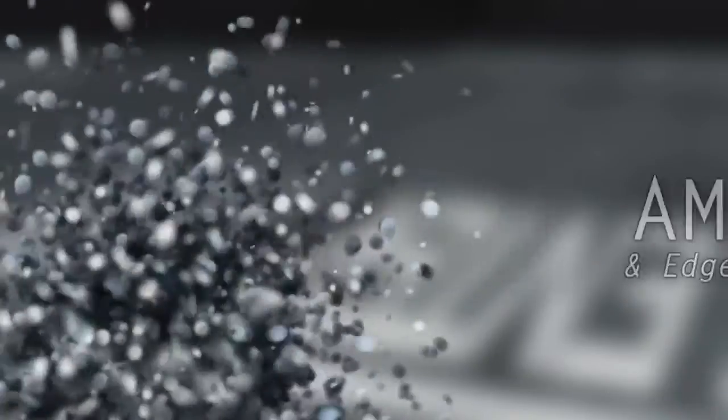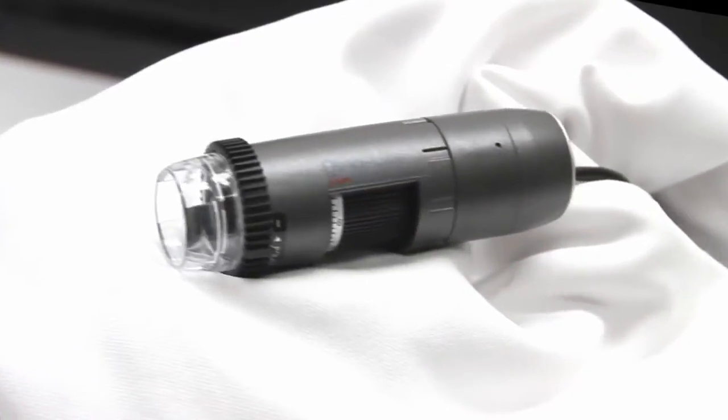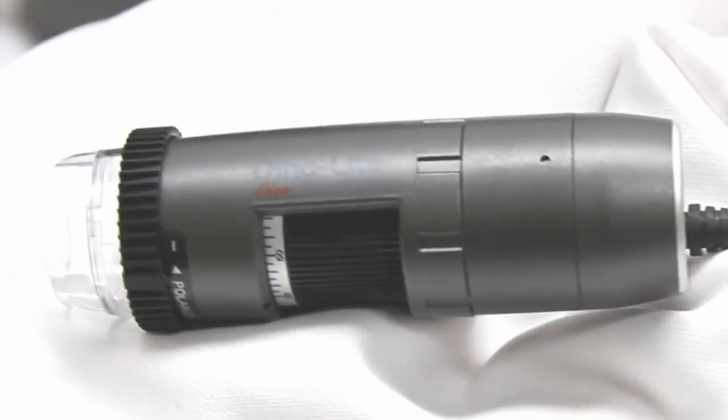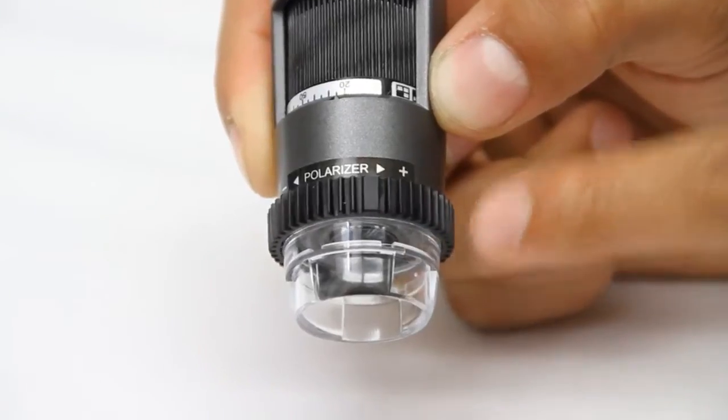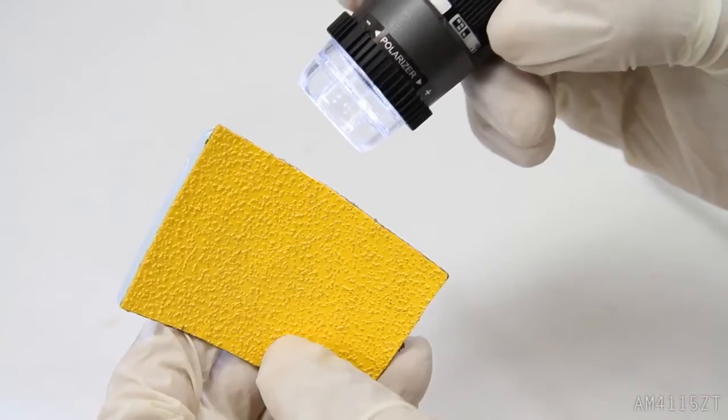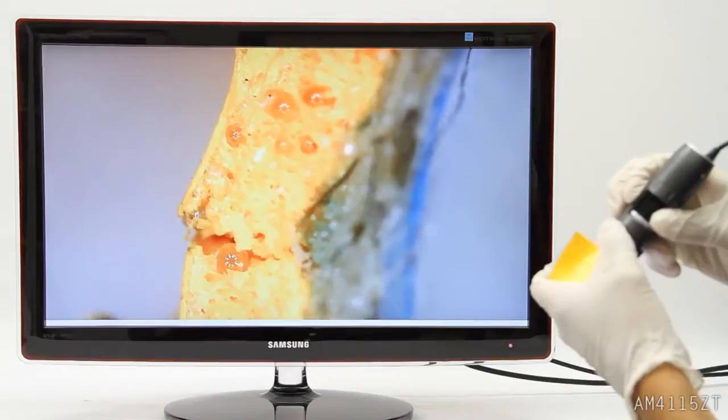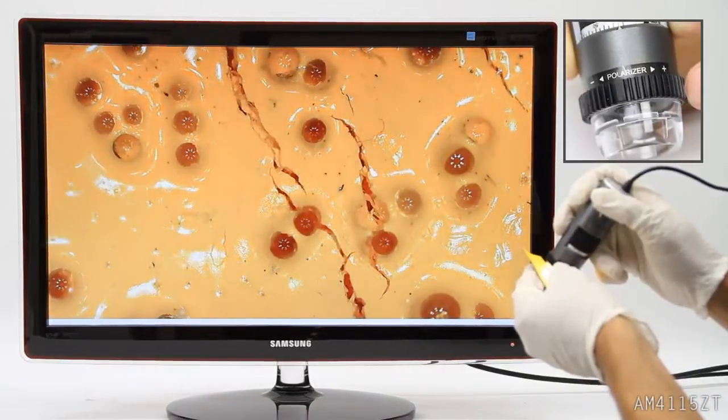Introducing the AM4115ZT Dynolite Edge handheld digital microscope camera. The AM4115ZT is the first in the Dynolite Edge series which features a new image sensor that delivers high image quality with a state-of-the-art lens design.